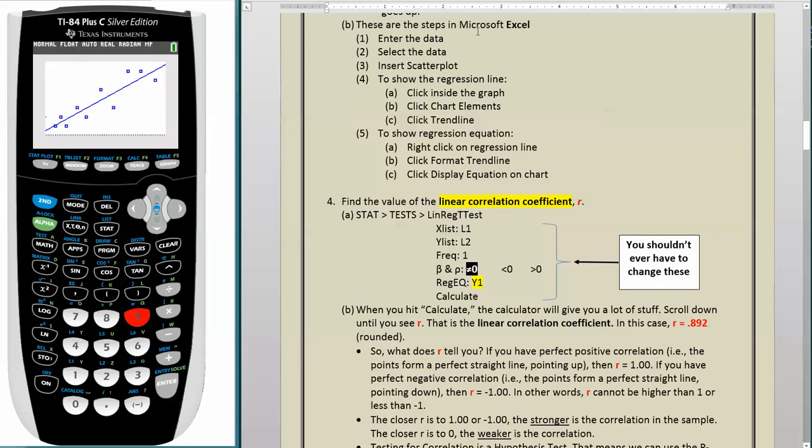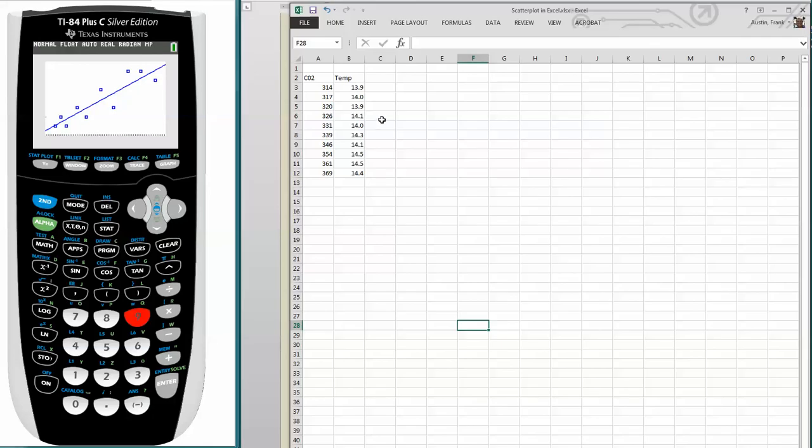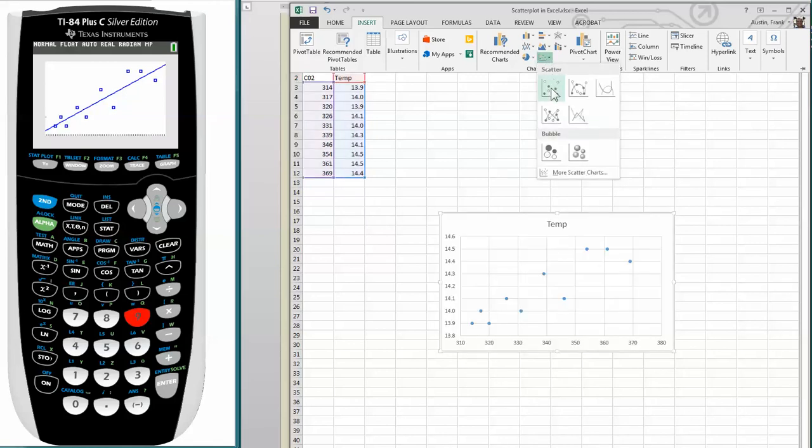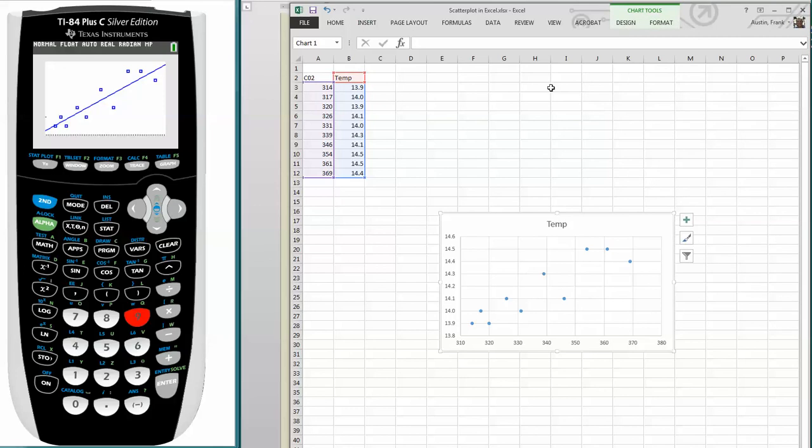Now we'll talk about the steps in Microsoft Excel. The first step is you enter the data. The second step is you select the data. The third step is you insert scatter plot. So here I have entered the data. Now I'm going to select the data. I'm going to click on insert. And here we see something that looks like a scatter plot. And indeed we're going to choose this right here. And there is the scatter plot.